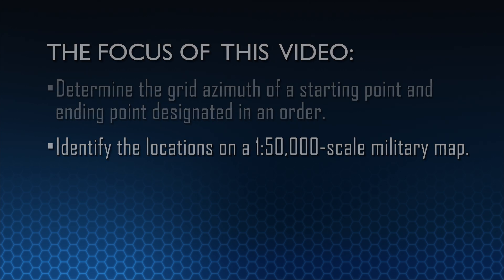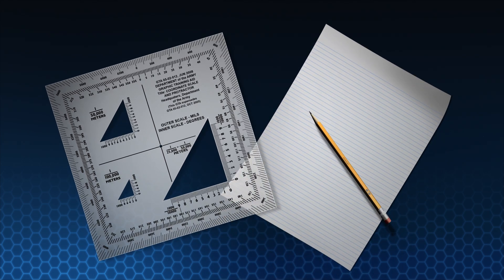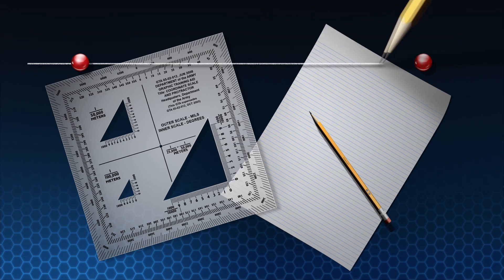Using a military protractor, a pencil, and paper, you will draw a line between the two points and determine the value of the angle.